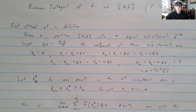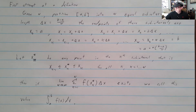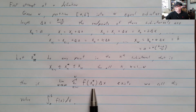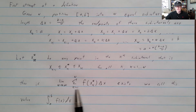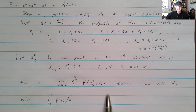Then you form this Riemann sum: Σ f(x_k*) Δx. If the limit as n → ∞ of that Riemann sum converges — that is, the limit exists — then we call that the definite integral.